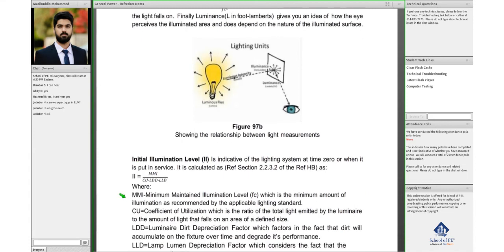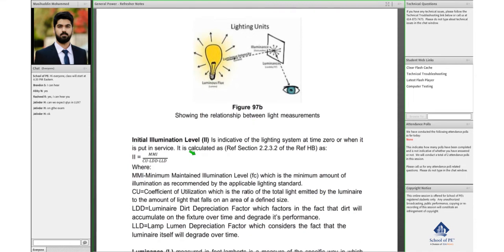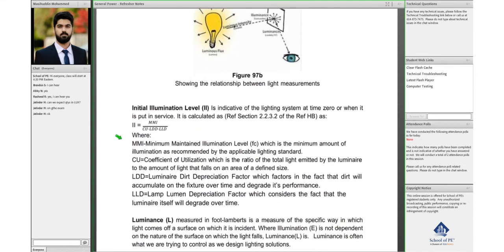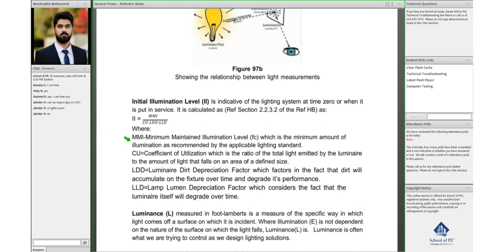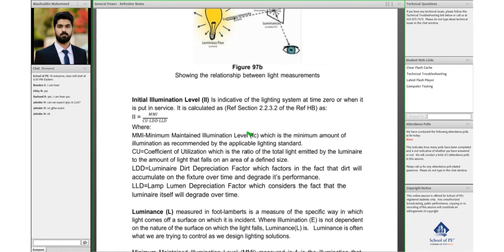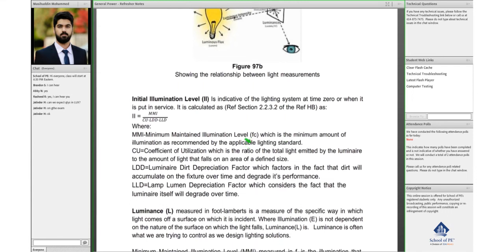Then the concept of initial illumination level, II. This formula is also given in the reference handbook. It's given by MMI, which is minimum maintained illumination level. The units for that is foot candles, which basically means it's the minimum amount of illumination as recommended by applicable lighting standard.